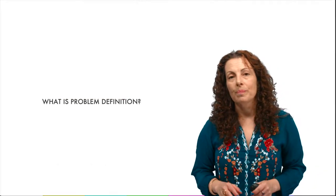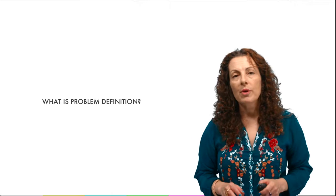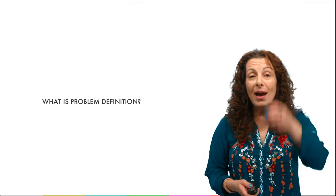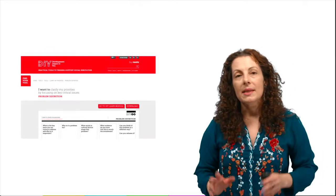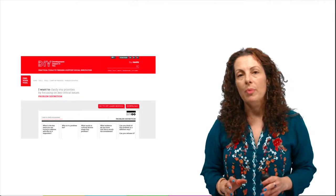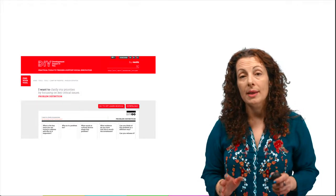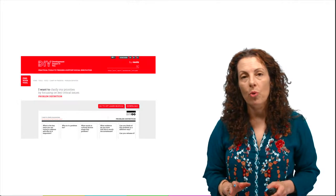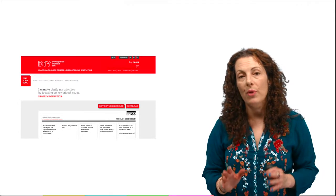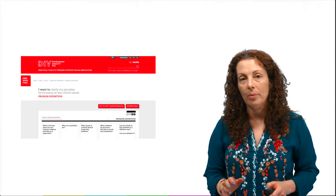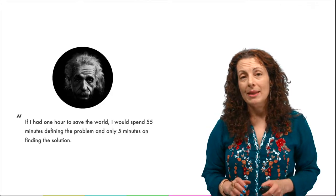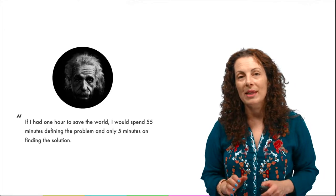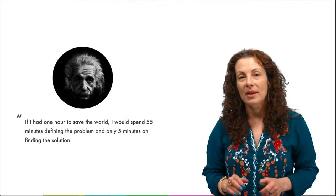So what is problem definition? Problem definition has long been recognized as the first and essential step in any rational policy-making process — in fact, in any problem-solving process. Yet despite its acknowledged importance, policymakers rarely pay enough attention to the art and science of problem definition. And in a public context, it's especially important for problem definition to be undertaken with the residents who are most affected by the problem. As Albert Einstein famously said, if I had one hour to save the world, I would spend 55 minutes defining the problem, and only five minutes on finding the solution.